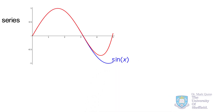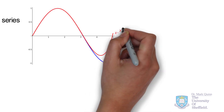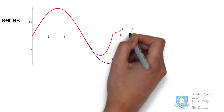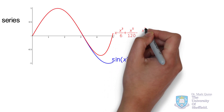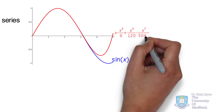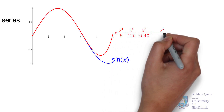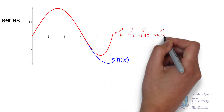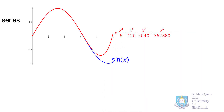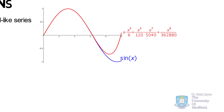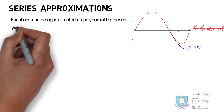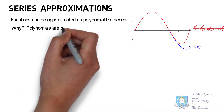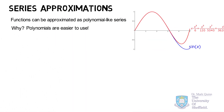The sine x function shown here can be fully described by an infinite series of polynomial terms. Here we can see the comparison with just five terms as an approximation. Such polynomial functions are typically easier to use than the original function.